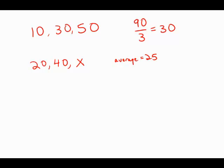They have an average of 25. There's three of them, which means they must have added up to a sum of 75.